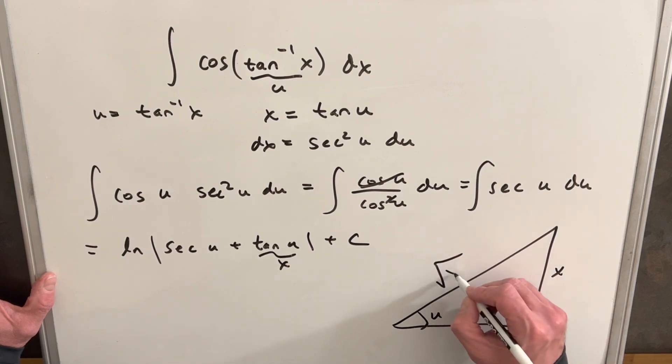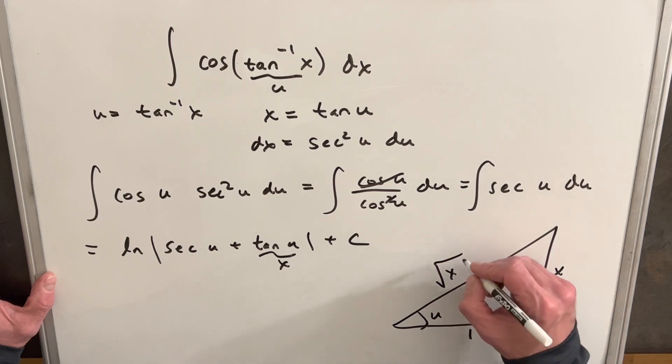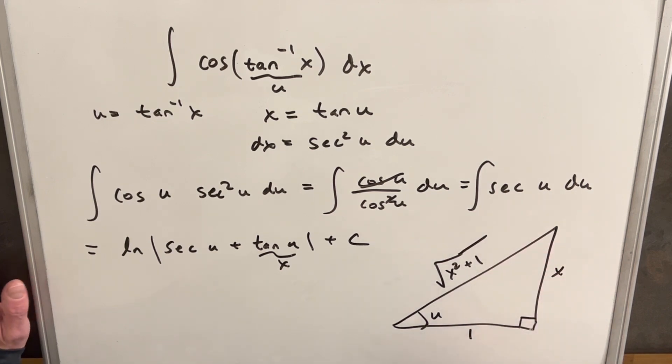Then we can find the hypotenuse with the Pythagorean theorem. Squaring this and squaring this we get x squared plus 1, square root x squared plus 1.